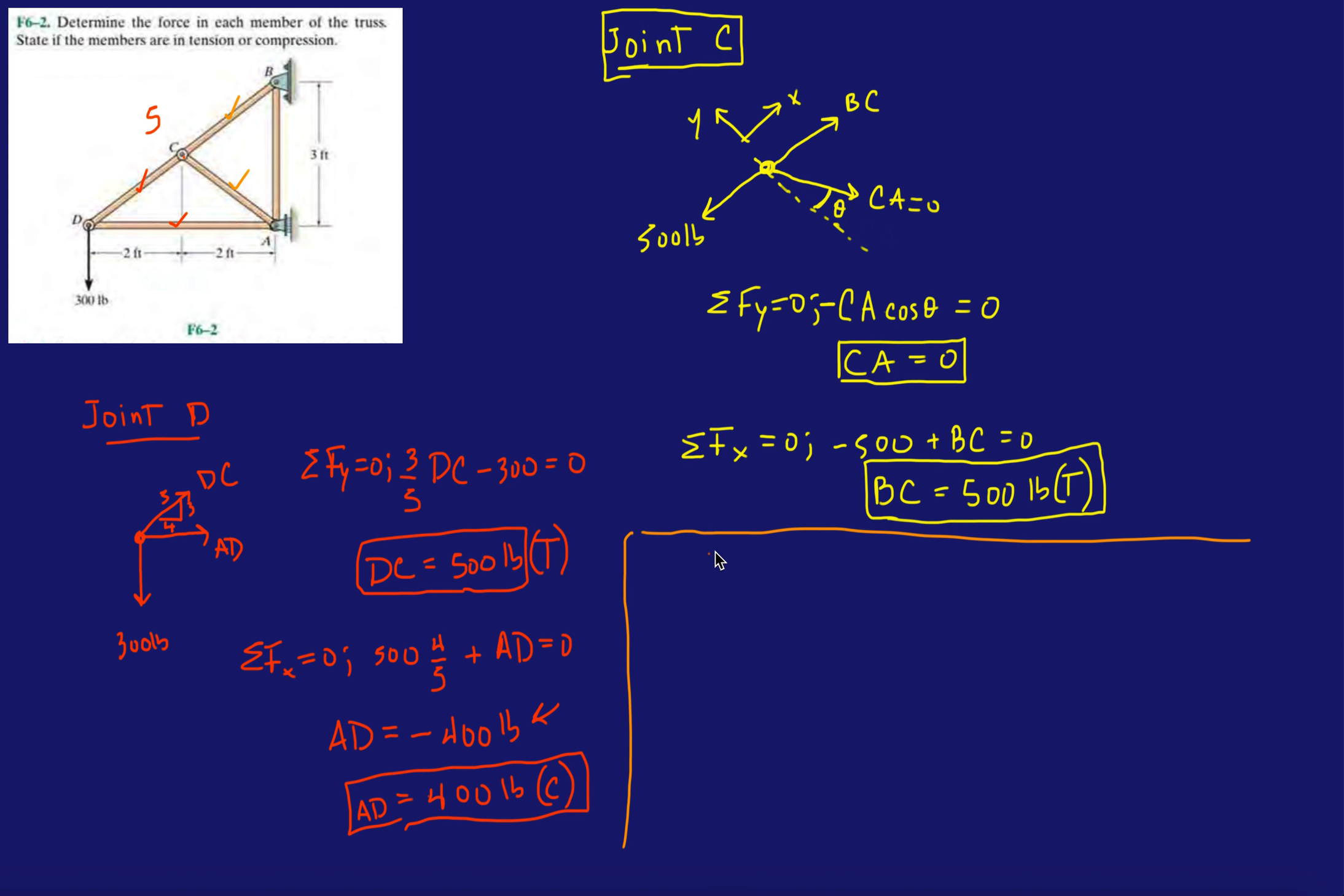We're going to do it without having to do that. So, at A, right, I have AD, so AD we already found, and look, I'm going to draw it in compression.